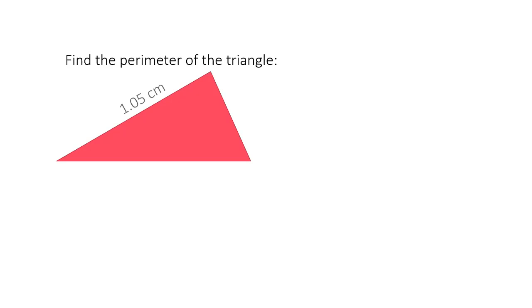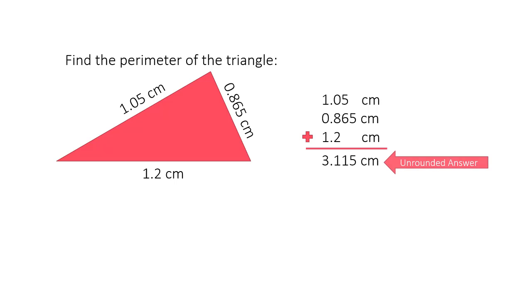Let's say that you've been asked to find the perimeter of this triangle given the length of its sides. To find the perimeter, you will need to add the lengths of each side together. We'll call this answer our unrounded answer.